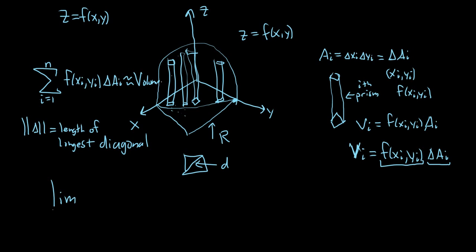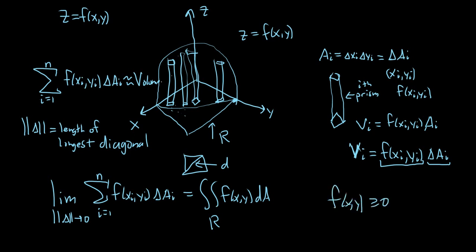So when we take the limit, as the norm goes to 0 of the finite sum, as i runs from 1 to n, we have the height of our prism times the area of the base of our little rectangle. We take this limit and say that this is equal to the double integral over the region R of f of xy, and we write dA. You can write it as dx dy or dy dx. Provided the limit exists, if the limit exists, we say the function is integrable. As long as f is greater than or equal to 0, we say that this is the volume of the solid below f and above R.